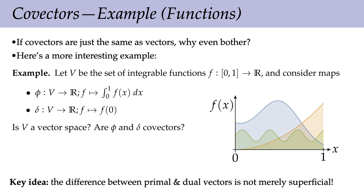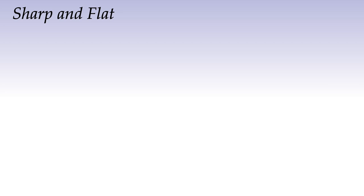The key idea is that the difference between primal and dual vectors can get really interesting — it's not a completely superficial distinction. For now, to keep things simple, we're going to stick with vectors in R^n.